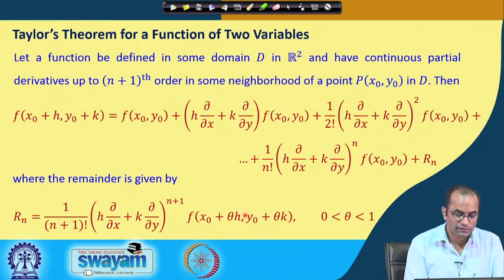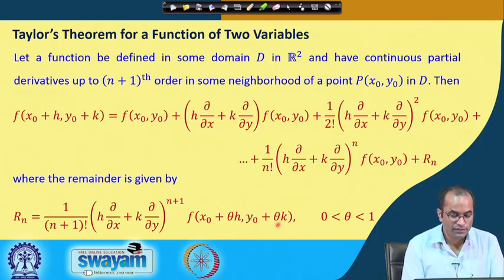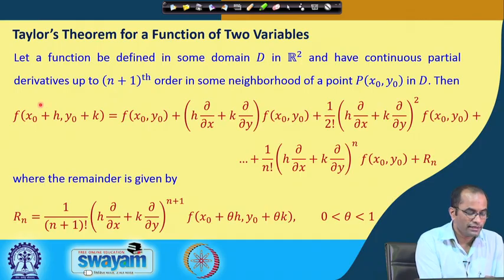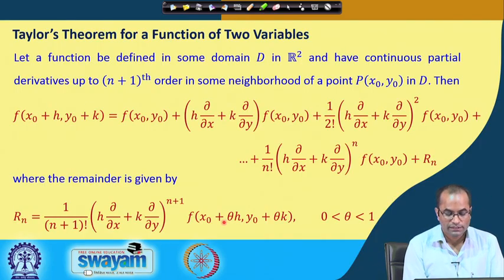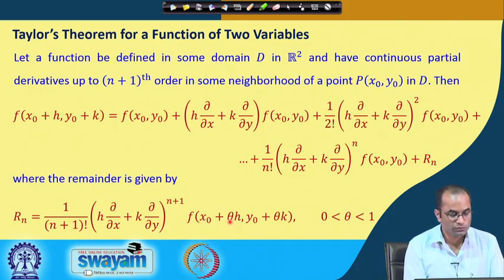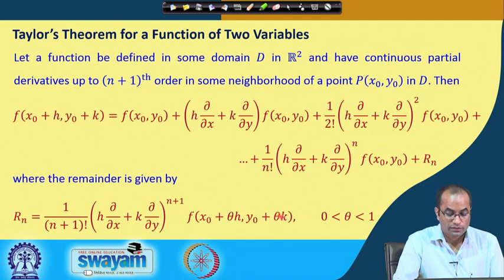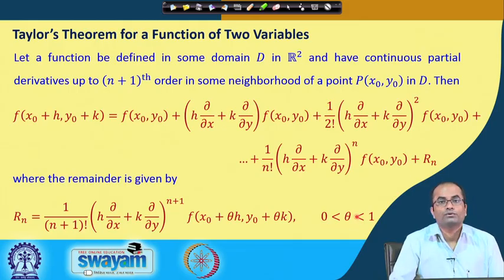This means the evaluation point lies between (x₀, y₀) and (x₀+h, y₀+k). The first argument varies from x₀ to x₀+h and the second from y₀ to y₀+k as θ varies from 0 to 1.